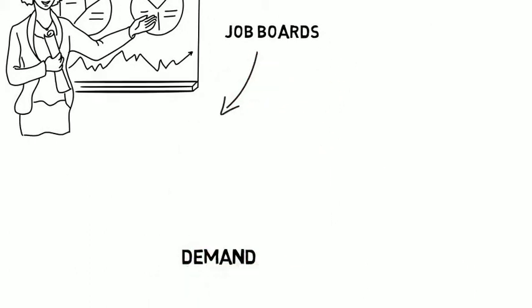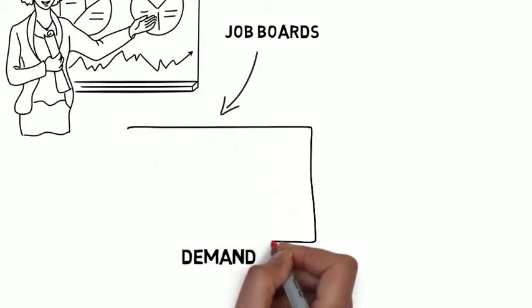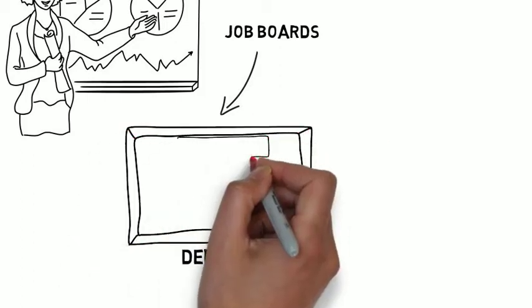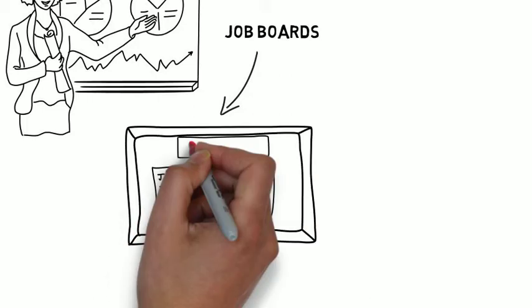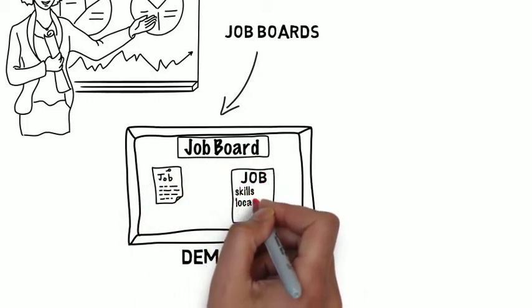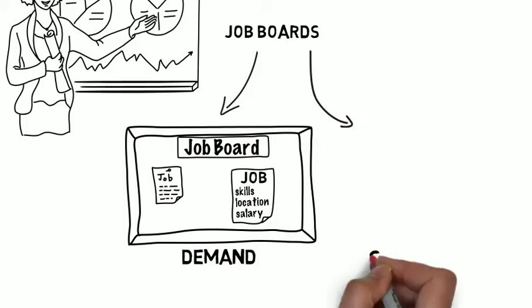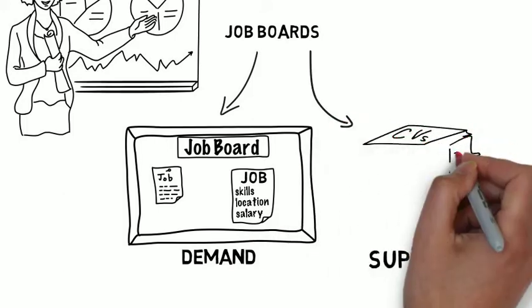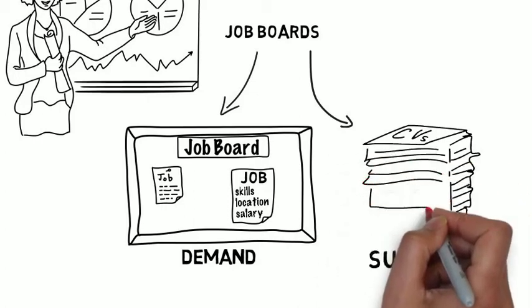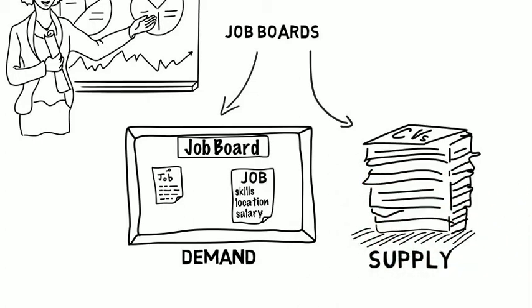Job boards provide us with two real-time sources of information: demand data, which is the job vacancy details that will include the skills required, the location and the salary offered, and supply data. This is an analysis of the people seeking work and provides us with a guide as to what skills are available and where.